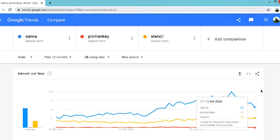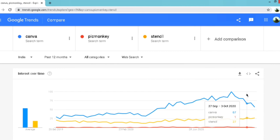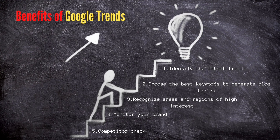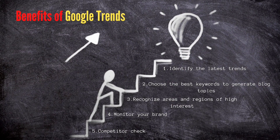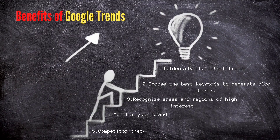Now let's go through some of the benefits that Google Trends offers to advertisers and marketers. First, identify the latest trends — hot topics can be used to create content and shape strategies. Second, choose the best keywords to generate blog topics. Third, recognize areas and regions of high interest. Fourth, monitor a brand — monitoring your brand's performance will benefit you in many ways. Finally, help to do a competitor check — although it's not the deepest form of competitive analysis, it will still give you a good picture. So there is plenty you can do with Google Trends.